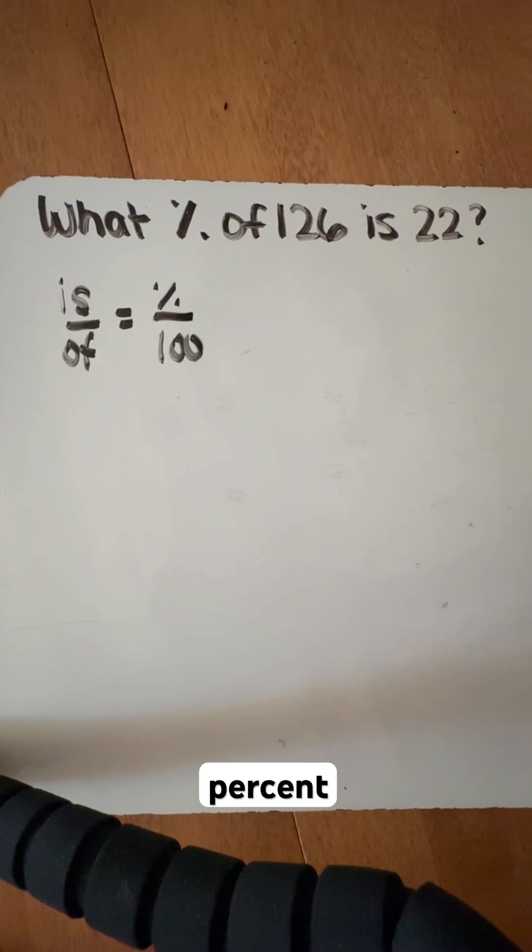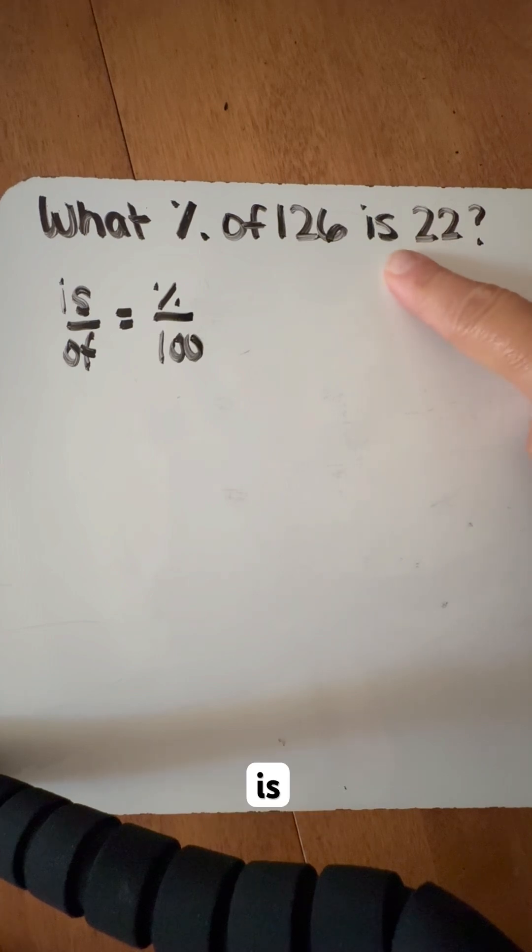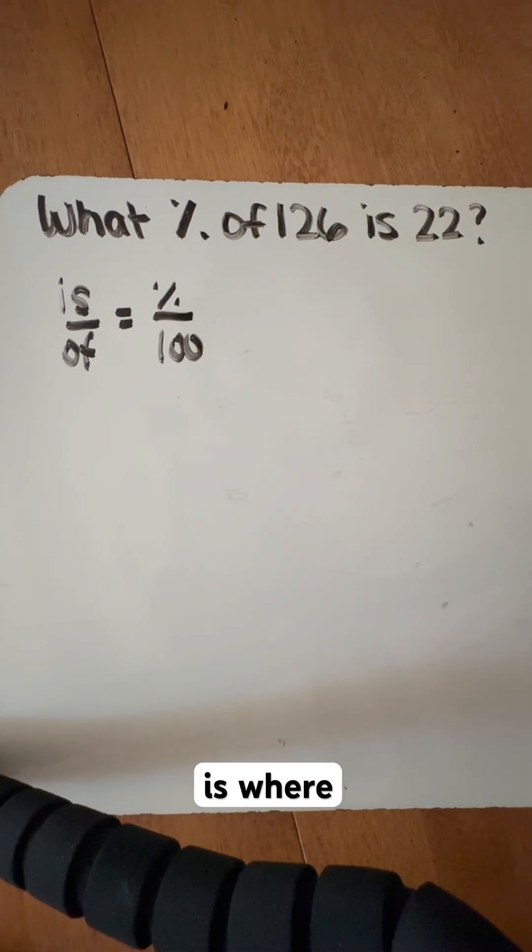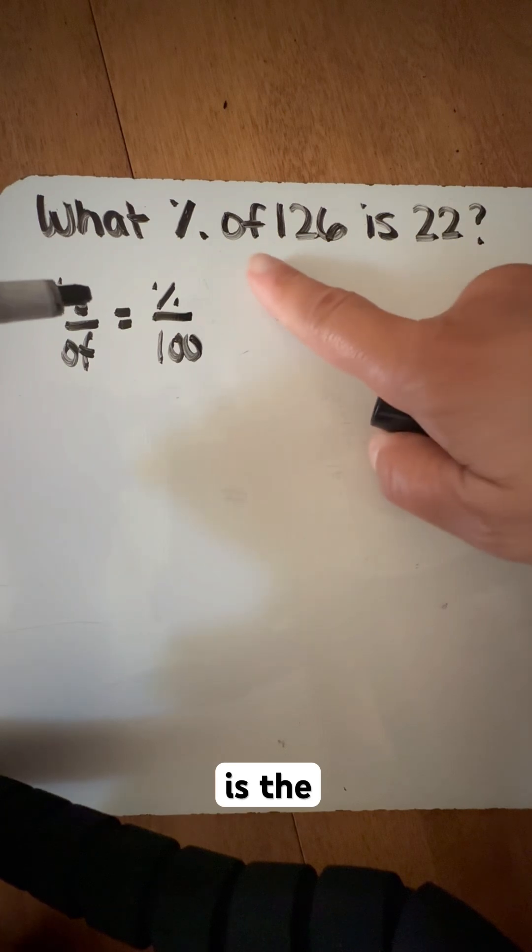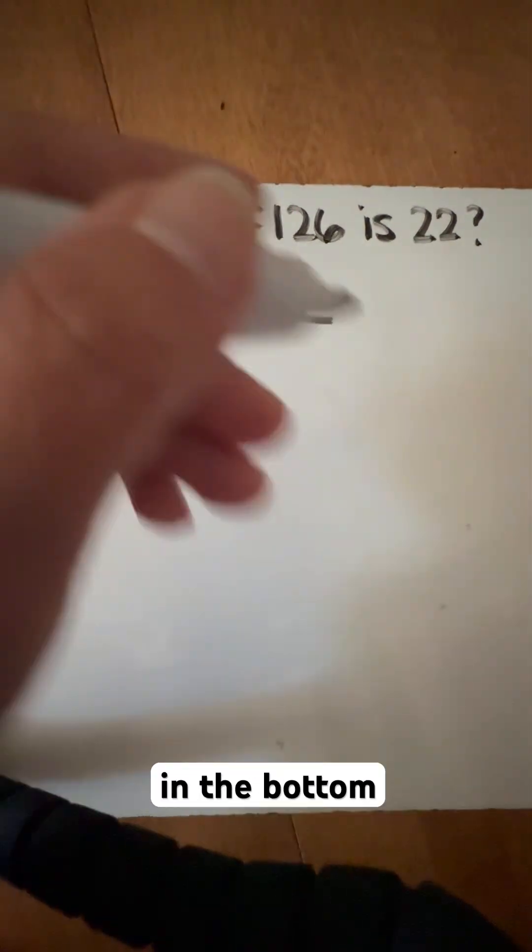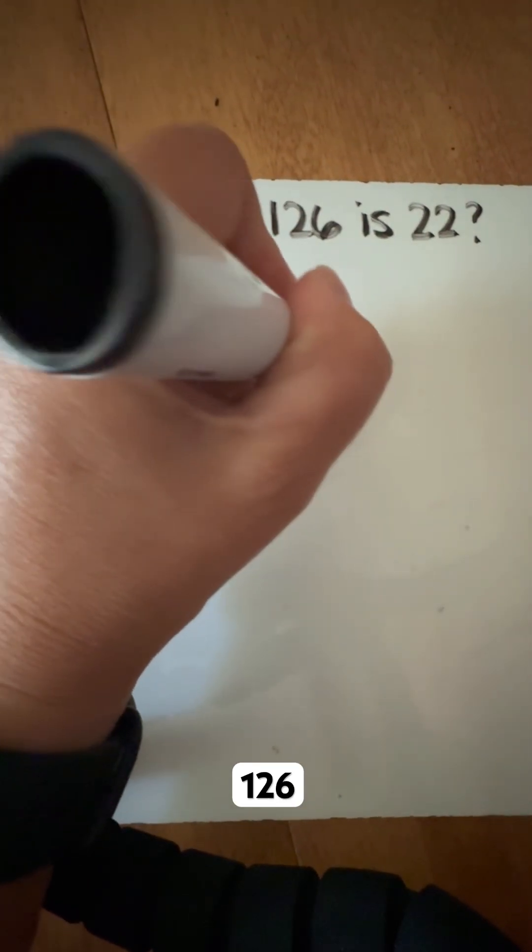It says, what percent of 126 is 22? So when you see the word is, is goes with that number. That means that that is where you place the 22 in the numerator. And then the 126 is the of. So you're going to place it down in the bottom where 126 belongs.